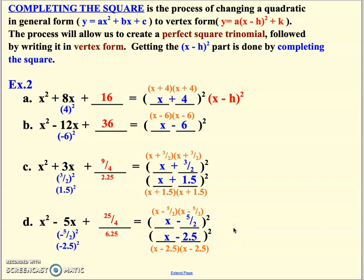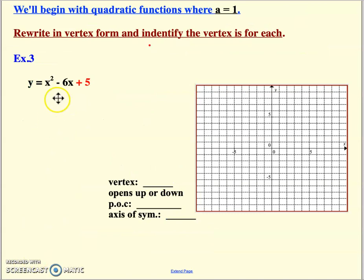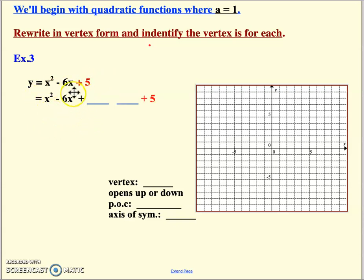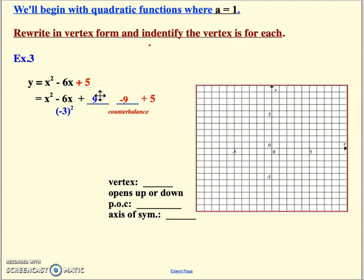We'll start with something that doesn't factor with two identical factors and try to create that situation. We take our constant number term and slide it off to the side to create some space. Then we go into turning this into a perfect square trinomial with two identical factors. The process is: half the middle term squared. Now the thing is, you just threw a number into the equation — this 9 — that didn't exist. If you put it in, you have to offset it with a counterbalance, which is the opposite: positive 9's counterbalance is negative 9. This gives a zero net effect, so the equation still graphs the same.